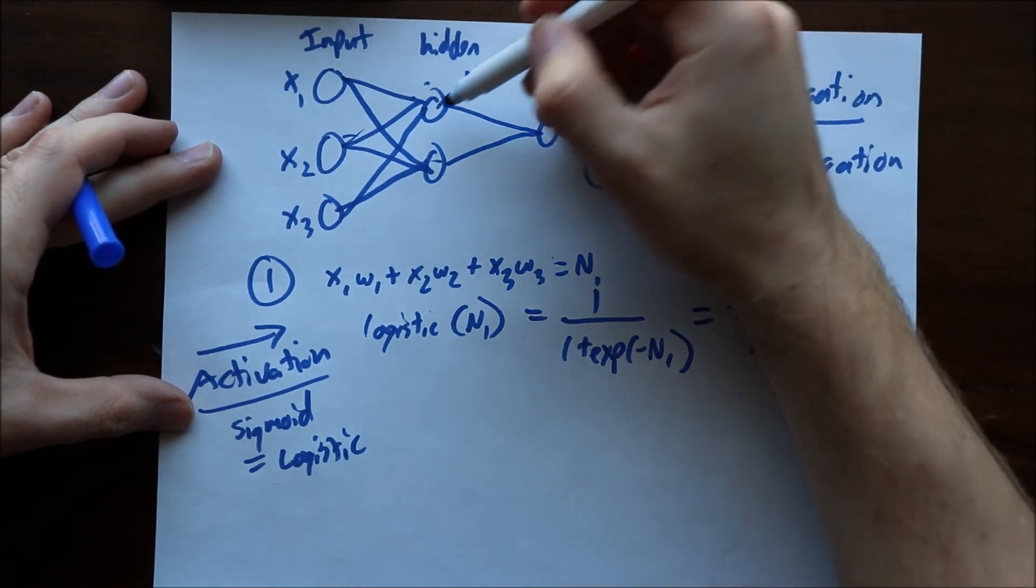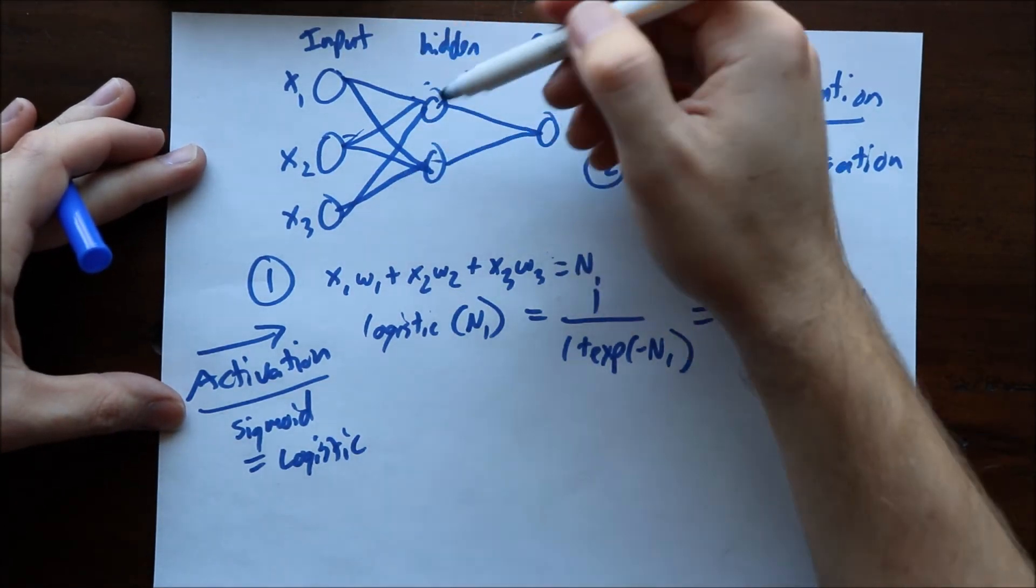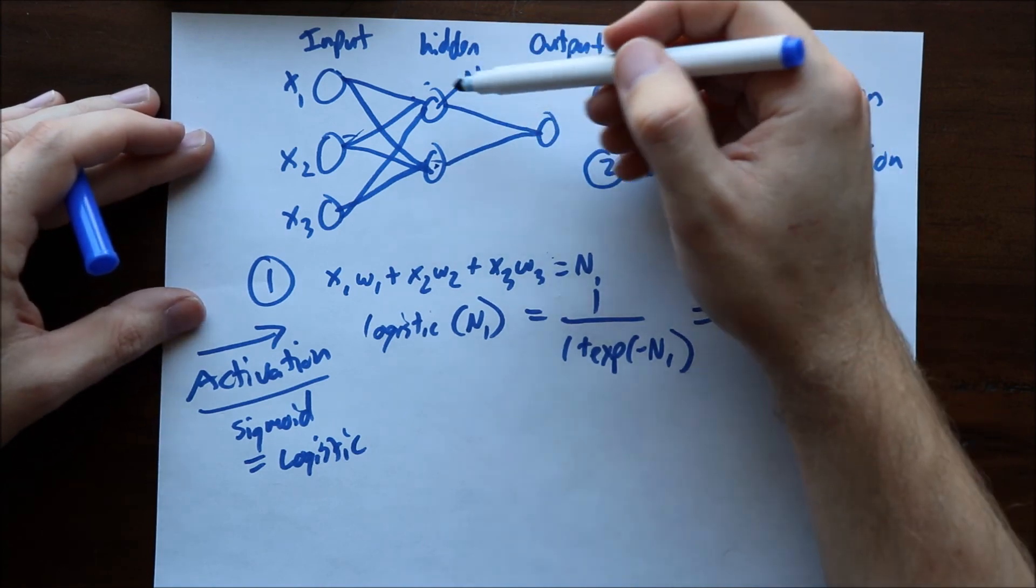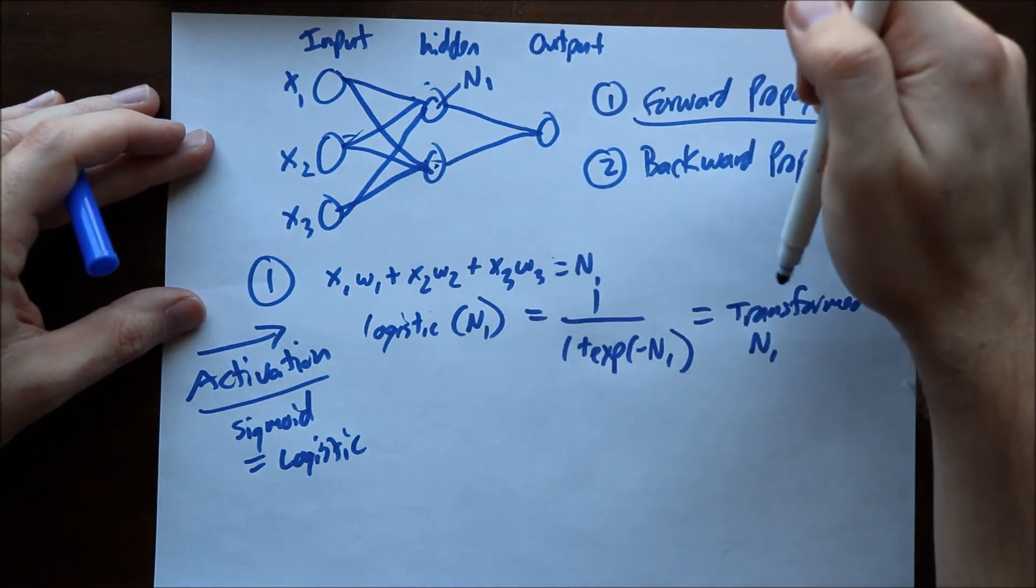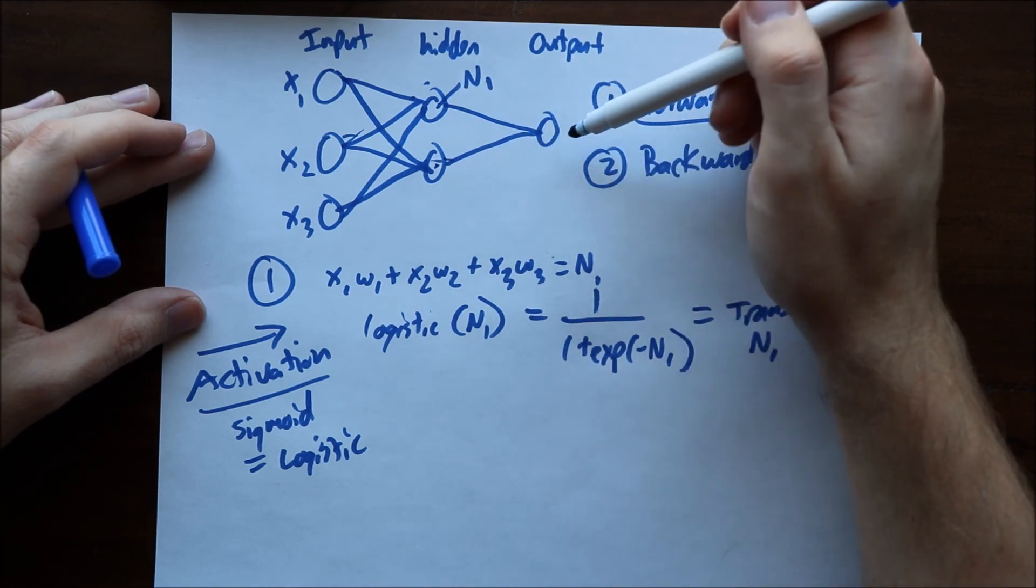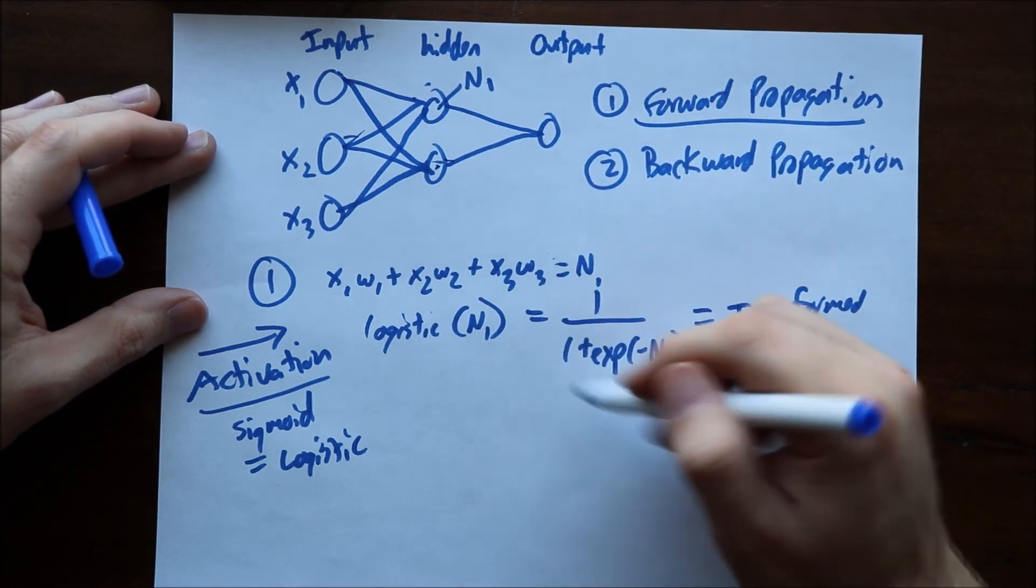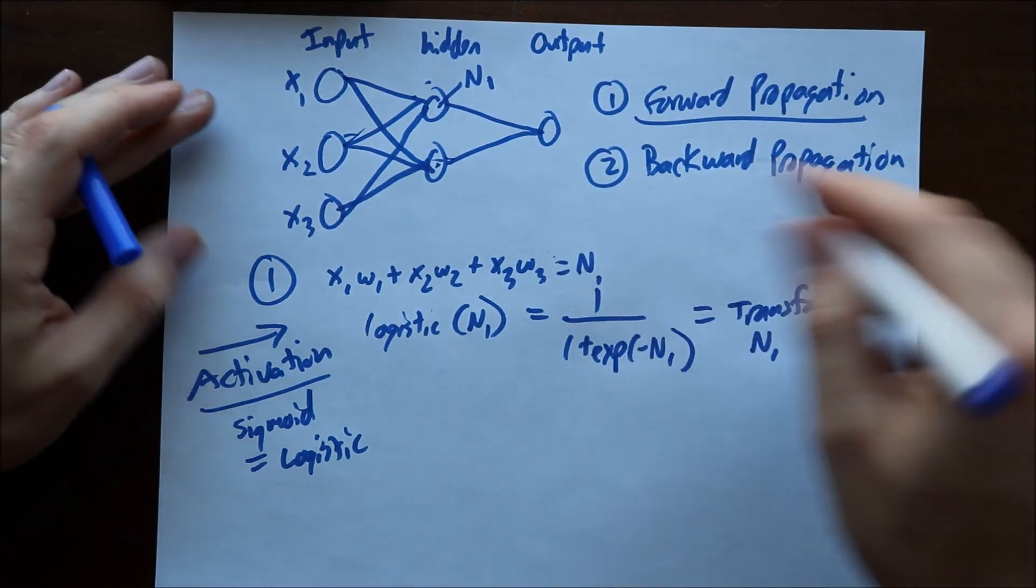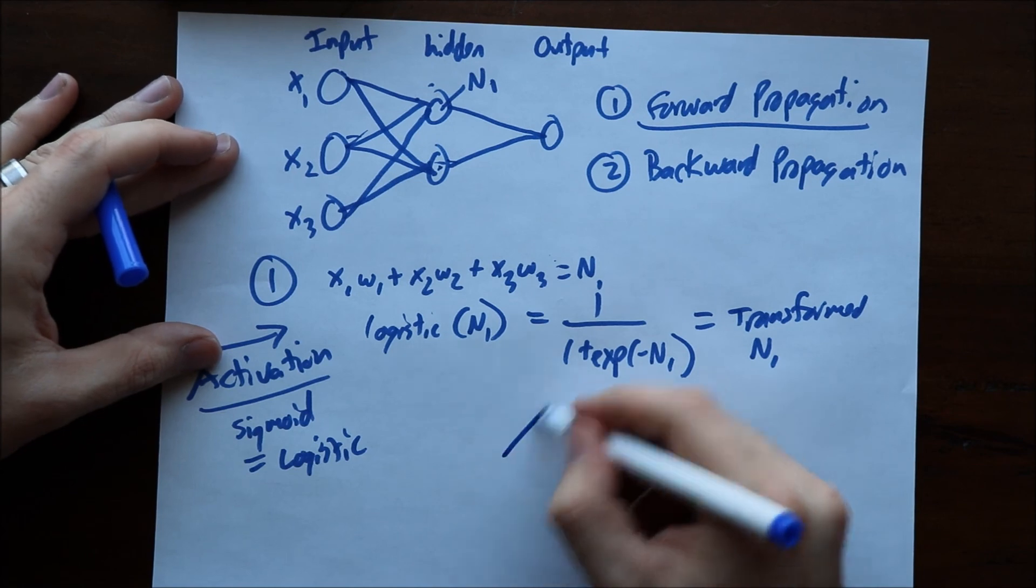You'll do the same thing for your second one and then again you'll do the exact same calculation. You'll take your transformed n1 and your transformed n2, you'll multiply them by weights and then you'll do a sigmoid transformation again. You'll do this equation again and then you'll end up with some value here which is your output. In all the simple mathematics this is the forward propagation. This is super simple.